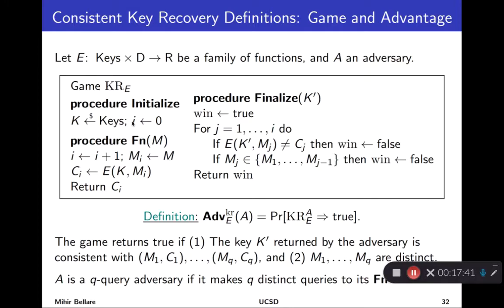What is all this other stuff? It's just bookkeeping. For some reason, this game wants to count and remember how many messages the adversary queried here. So, it initializes the counter here. Whenever this is called, you increment it and you store the message as m sub i. The adversary doesn't care about any of this. It just gets back the result, which is the same as before, e applied to m sub i under the key k.